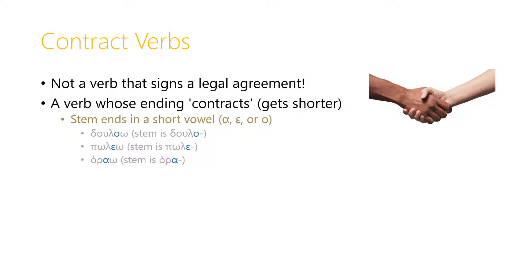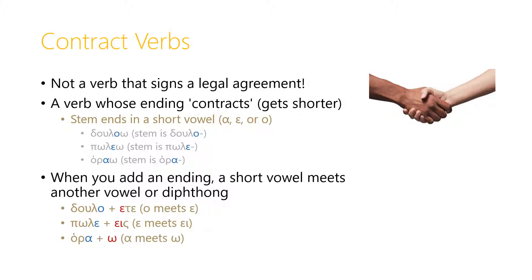Like doulao, where the stem is doula; poleo, where the stem is pole; horao, where the stem is hora. When you add an ending, two short vowels meet — doula plus ete, omicron meets epsilon. Or you have a short vowel meeting a long vowel or diphthong. So we have pole, the epsilon, meeting the ai diphthong in ace. Or the alpha in hora meeting the omega of the first person singular ending.